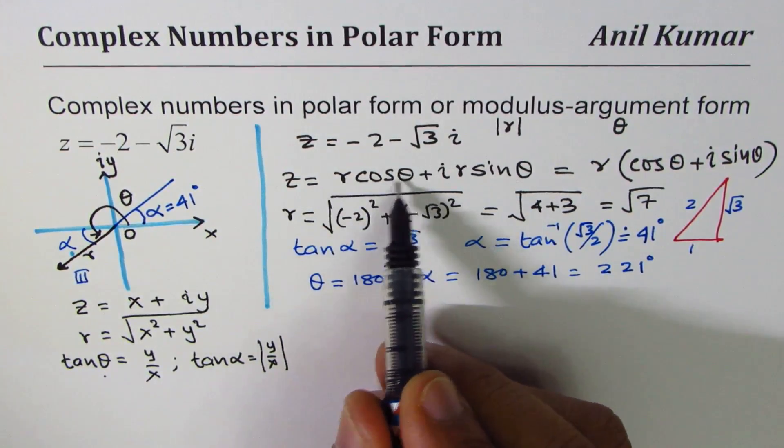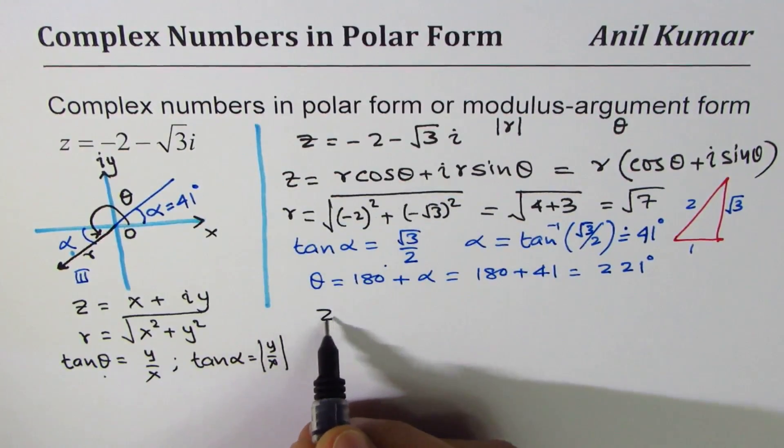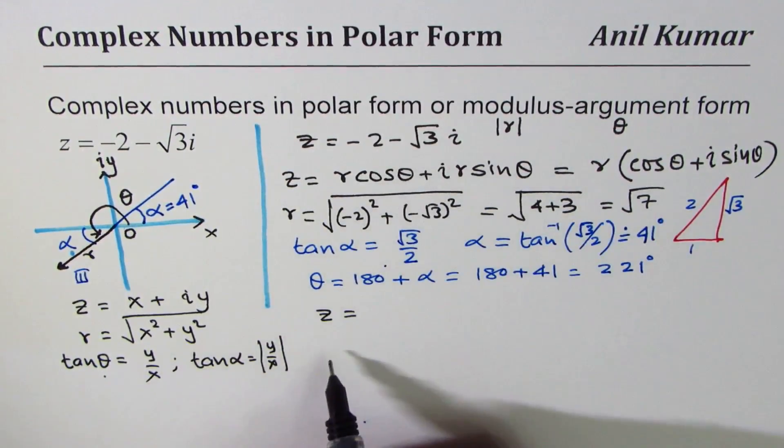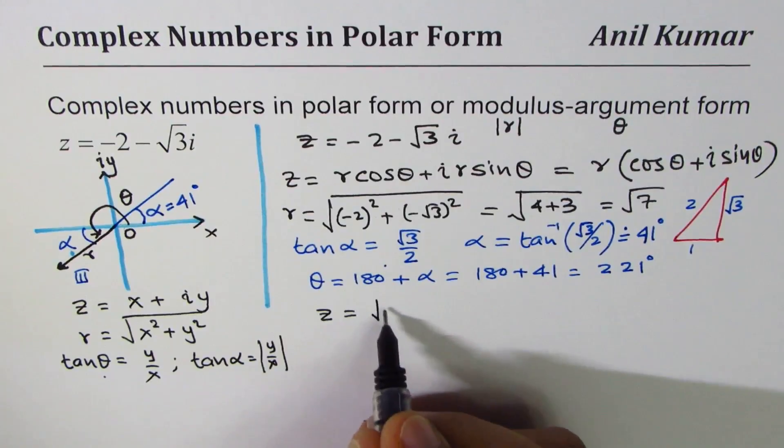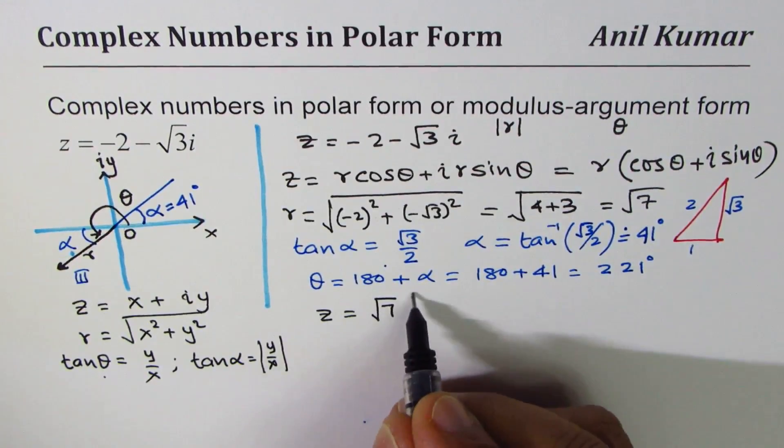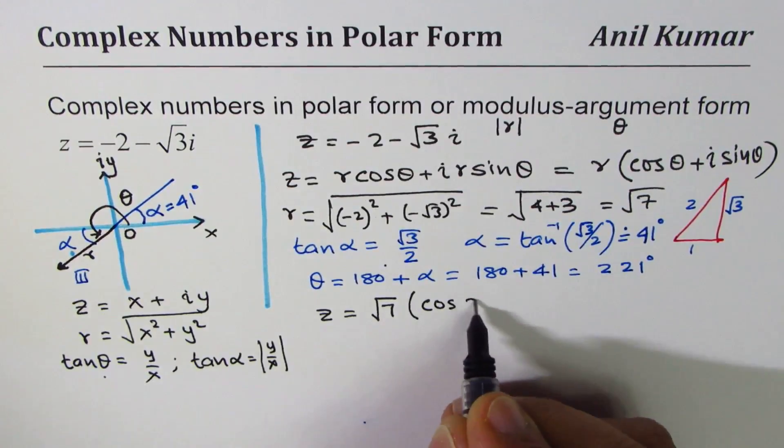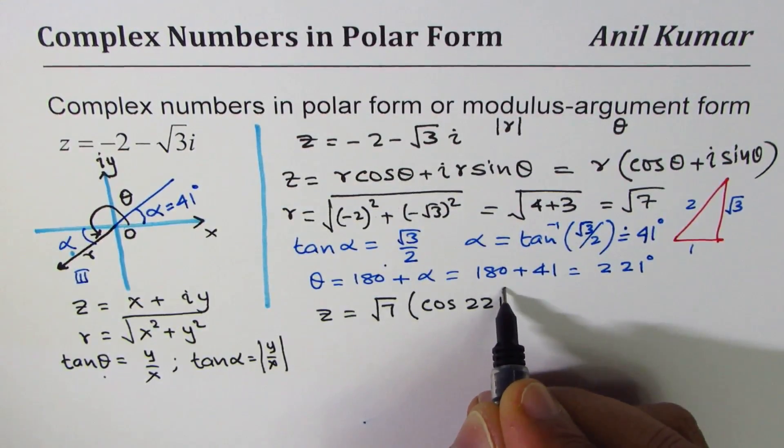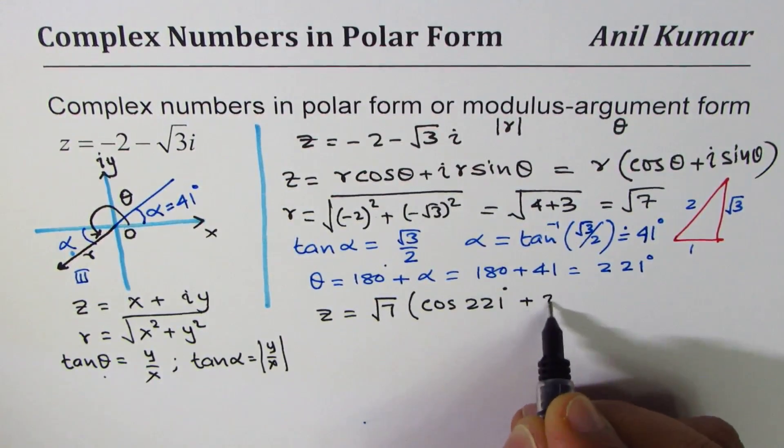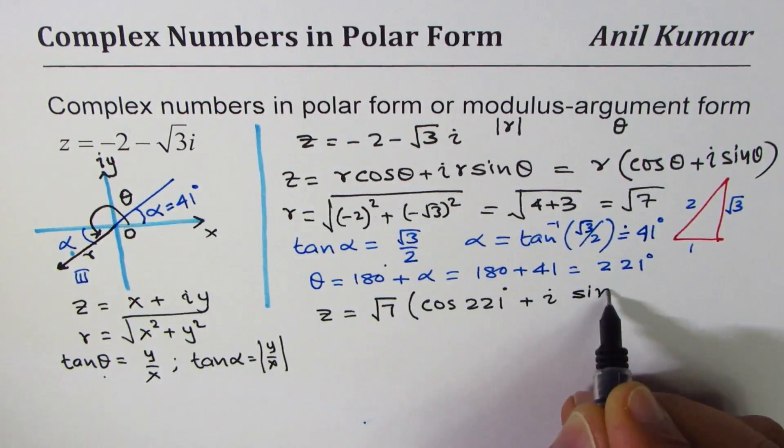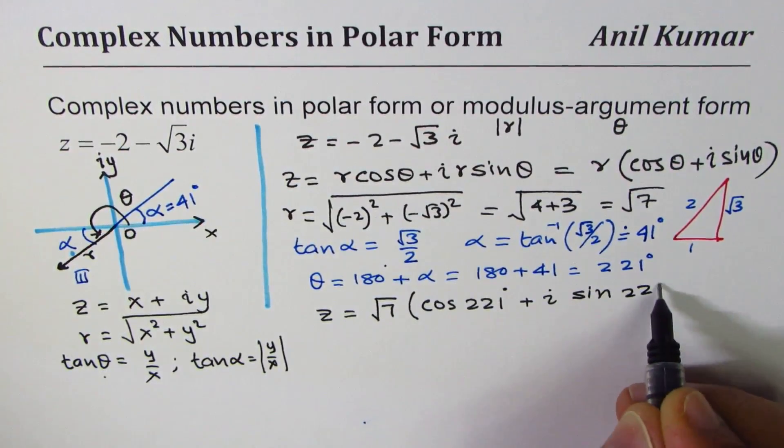Now when you know r and θ, you can write the complex number in polar form: √7 times cos of 221° (you are in quadrant 3) plus i sin 221°.